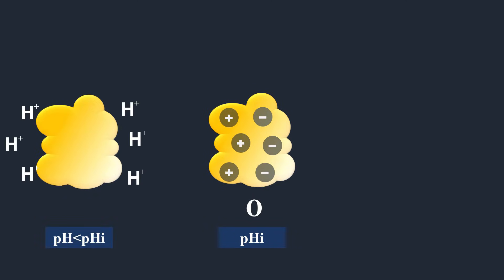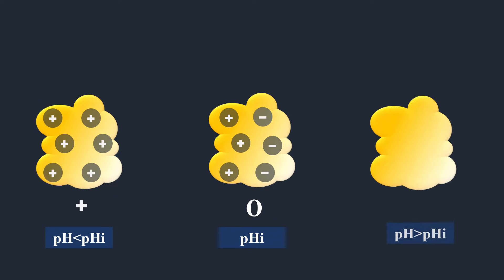At a pH below their isoelectric point, proteins carry a net positive charge. And at a pH above their isoelectric point, they carry a net negative charge.